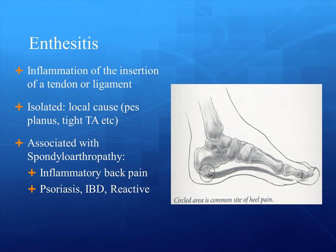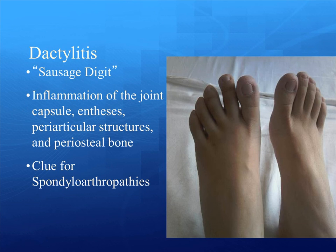As mentioned in the earlier slide, enthesitis can be a clinical clue to spondyloarthropathy, such as psoriatic arthropathy, IBD-associated spondyloarthropathy, or reactive arthritis. Enthesitis refers to an inflammation of the insertion of a tendon or ligament, and an individual can have isolated enthesitis, which can be caused by pes planus or Achilles tendonitis. Dactylitis as well can be a clinical clue to spondyloarthropathy — it's often referred to as sausage digit. It refers to inflammation of the joint capsule, periarticular structures, and periosteal bone, as seen in the picture showing swelling of the second digit.